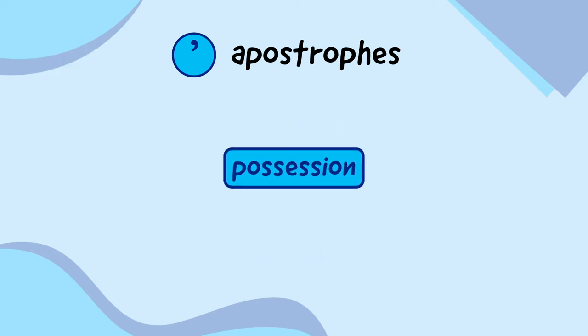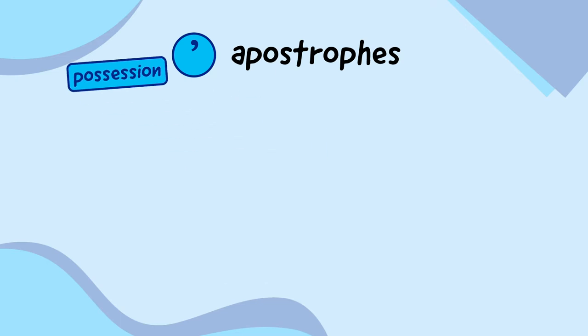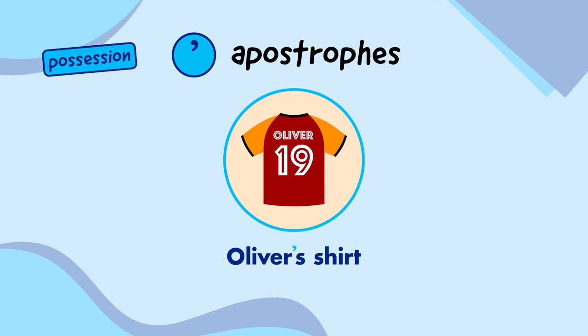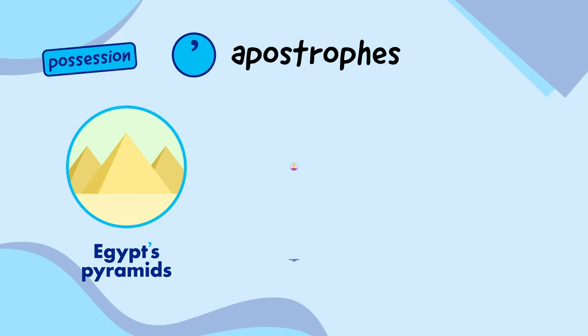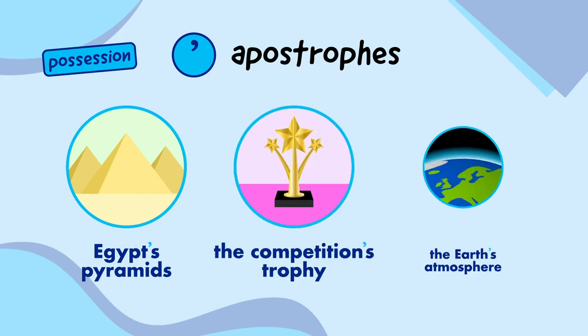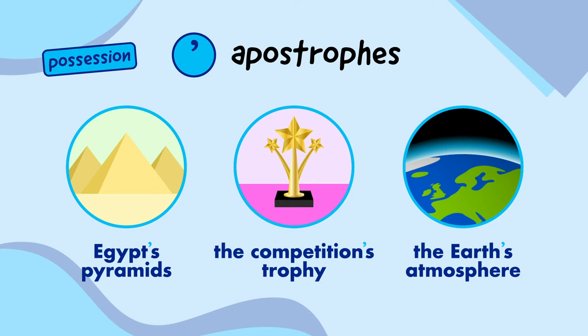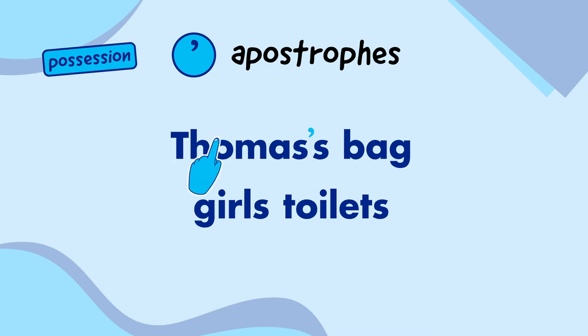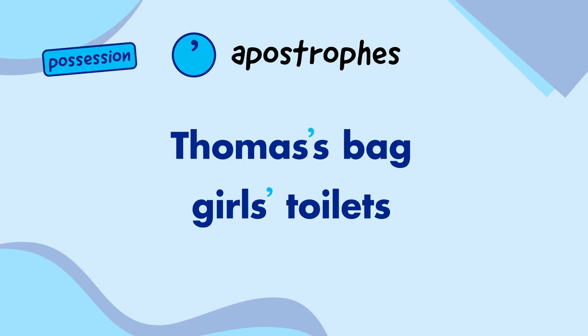The second way we use an apostrophe is to show possession. If this shirt belongs to Oliver, it's Oliver's shirt with an apostrophe before the S. Other examples of possession are Egypt's pyramids, the competition's trophy, and the Earth's atmosphere. If the word that needs an apostrophe already ends in an S, like Thomas or girls, we can either use an apostrophe and another S, or just use an apostrophe on its own. Once you've chosen which one you prefer, make sure you stick to it.